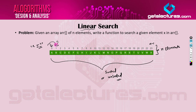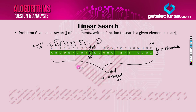If the element is not present at index location 0, we go to index location 1. If it's not there either, we look at index locations 2, 3, 4, 5, 6, 7, 8, and 9 — until we find the element. If the element is found, we return the index location. If the element does not exist in the array at all, we return minus one.